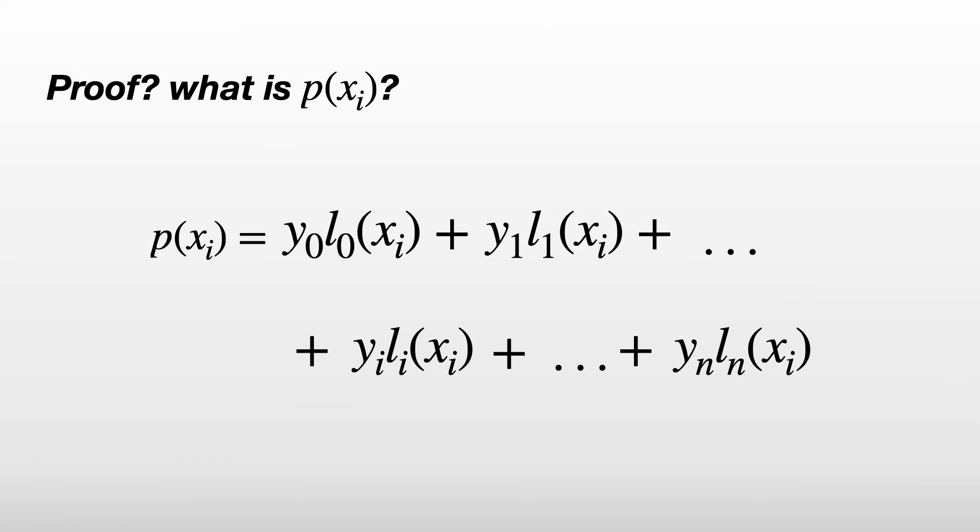Now apart from l_i, all the Lagrange polynomials l_0, l_1, etc. are all equal to 0 at x_i, and l_i is equal to 1 as we engineered it to be.